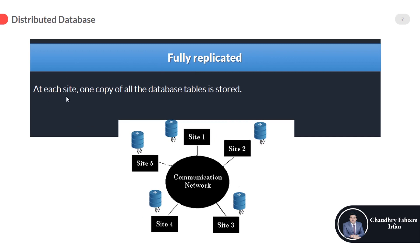In fully replicated design, at each site one complete copy of all the database tables is stored. We store all copies — not just accounting or engineering data, but the entire database — at every location. Site 1 contains a full copy, as does site 2, site 3, and so on. The complete database is saved at all sites.